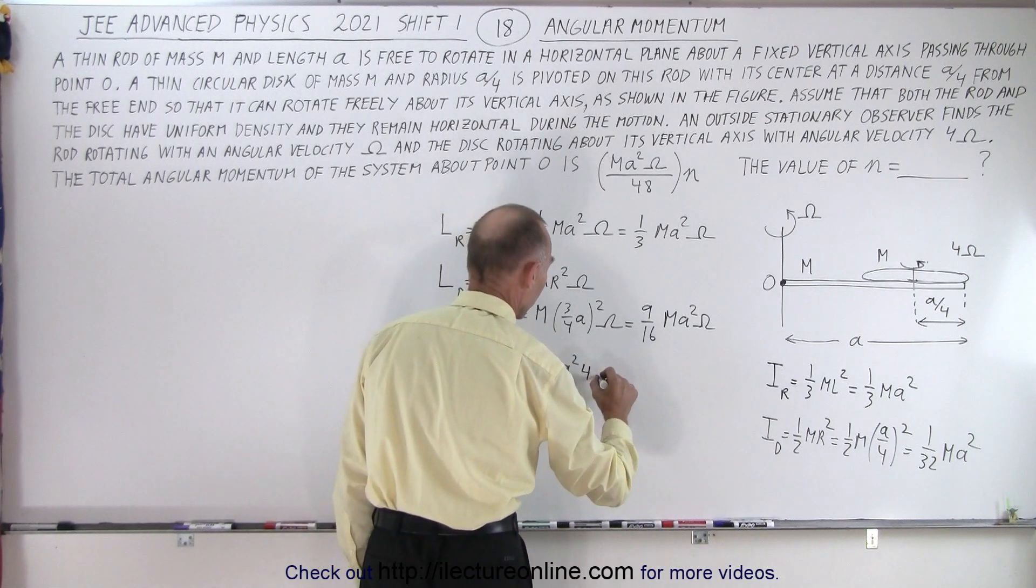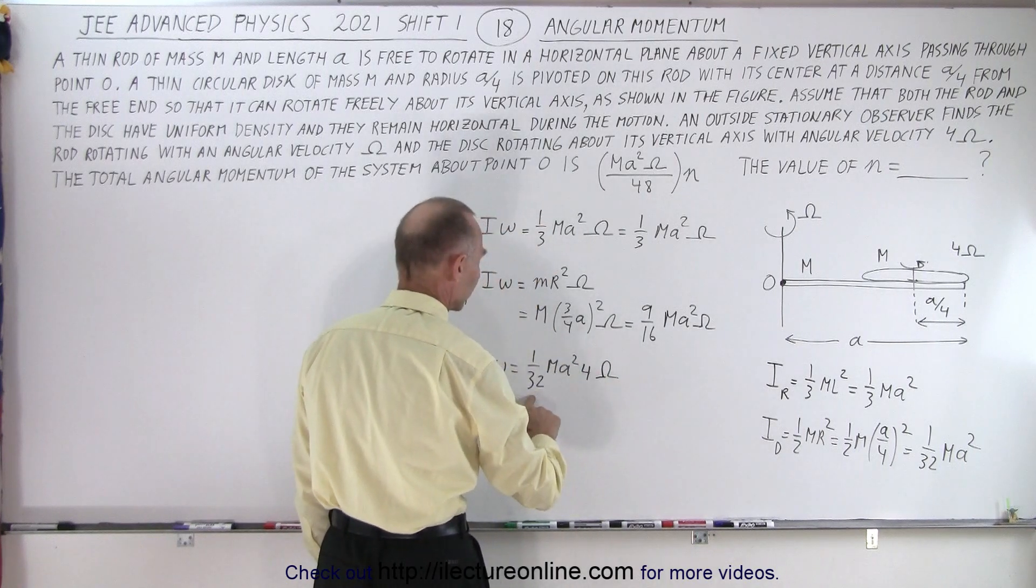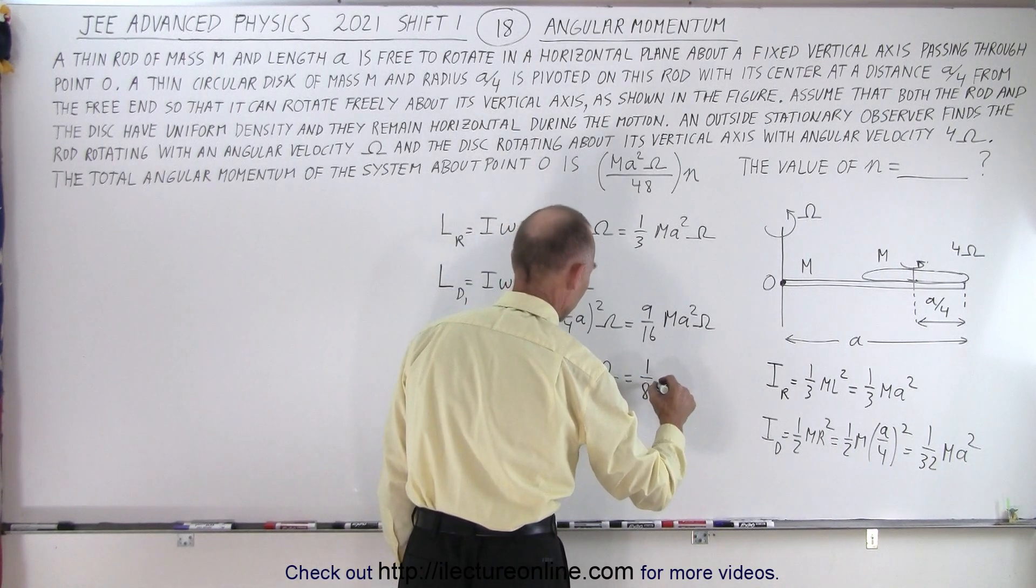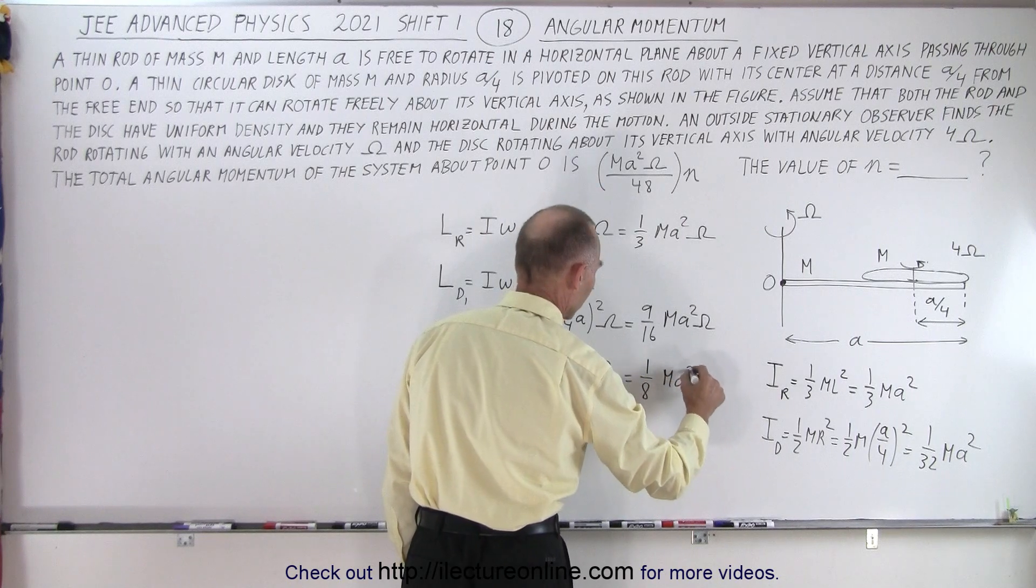In this case, omega is 4 omega. So 4 divided by 32 is 1 eighth. So that's equal to 1 over 8 times m a squared omega.